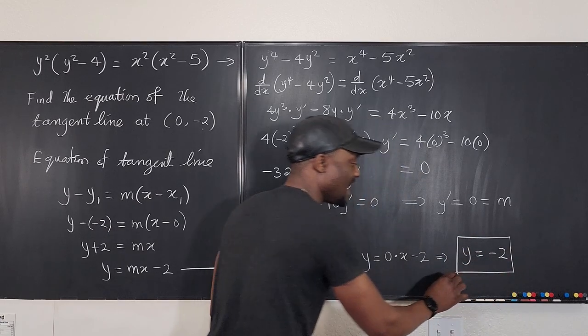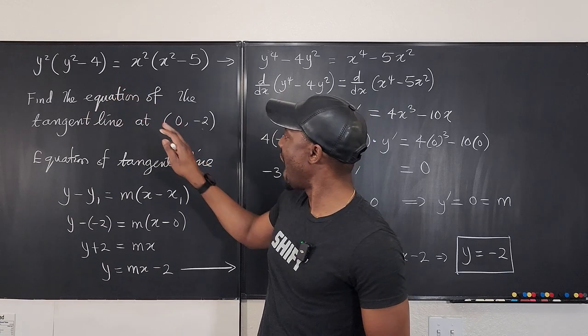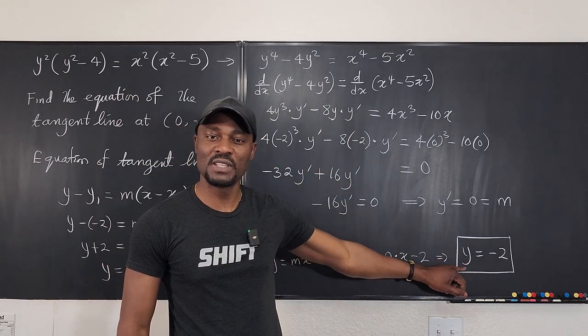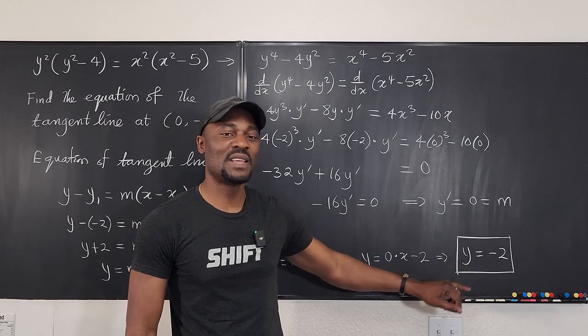This is the line tangential to this curve at this point. This is the only line that forms a tangent to the curve at this point. Y equals negative 2.